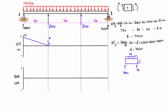If we extend the free body diagram to just the left of the second point load, we add another 40 kilonewtons of distributed load, making the total distributed load 80 kilonewtons. Now we have 60 up and 80 down, so the internal shear force needs to be 20 pointing up — opposite to the positive sign convention — making it negative 20. The shear linearly decreases from positive 20 to negative 20 across that four-meter span.